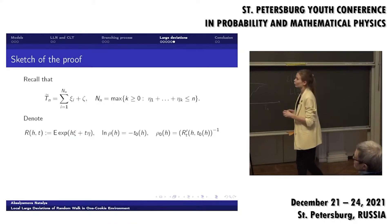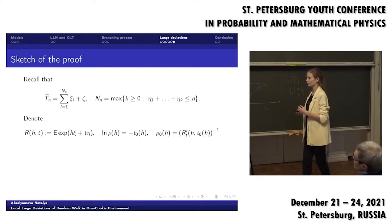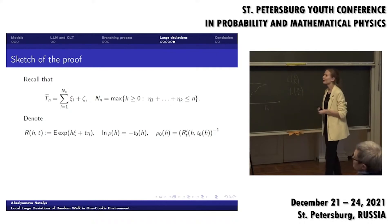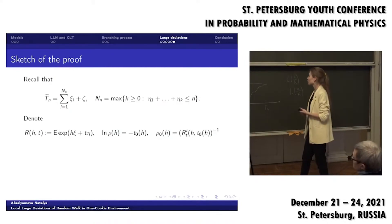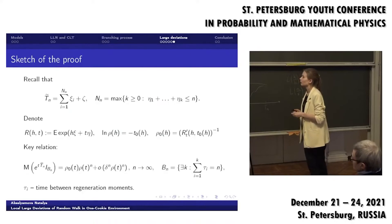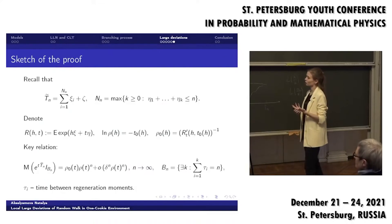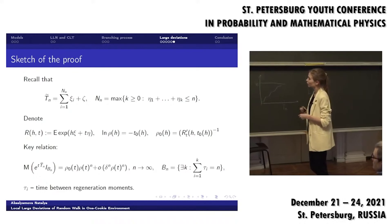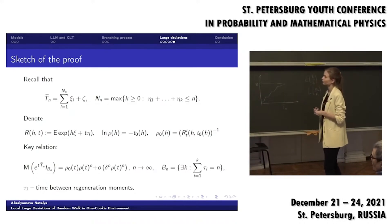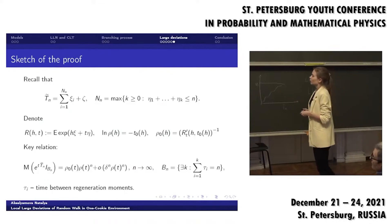A little sketch of the proof. I will remind you of the talk of Gabriel Bakov which was on Wednesday. We constructed a renewal process with such regeneration moments. We can see that we have two functions, which I described earlier, and calculate some functions. And the key relation which must be established to use such kind of formula is on the slide.